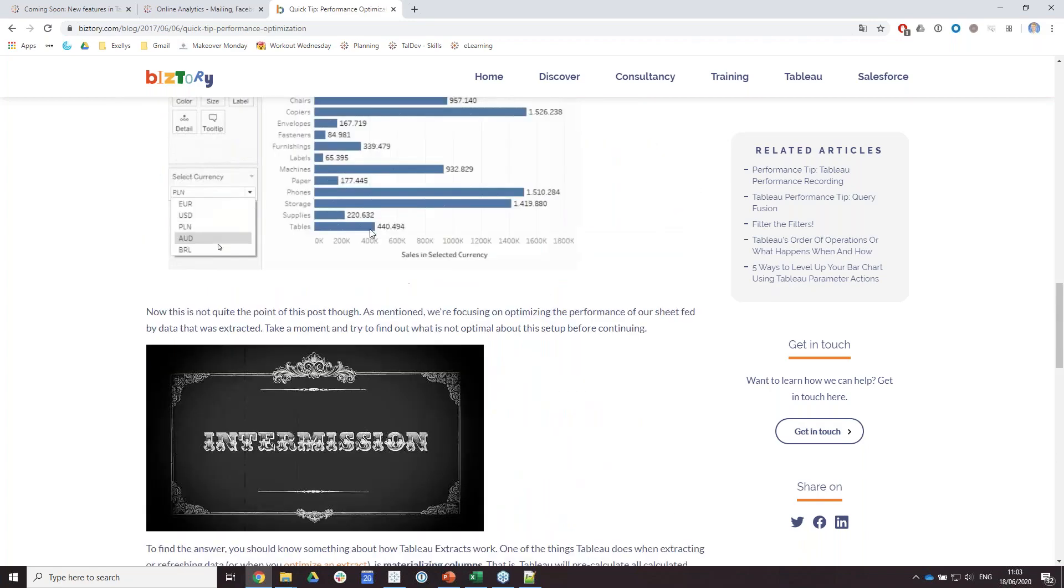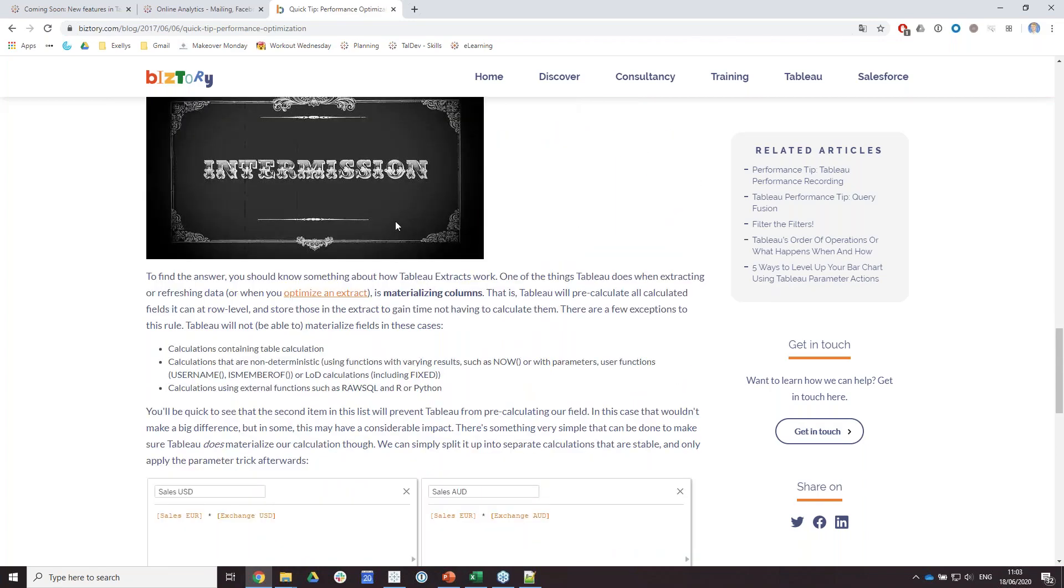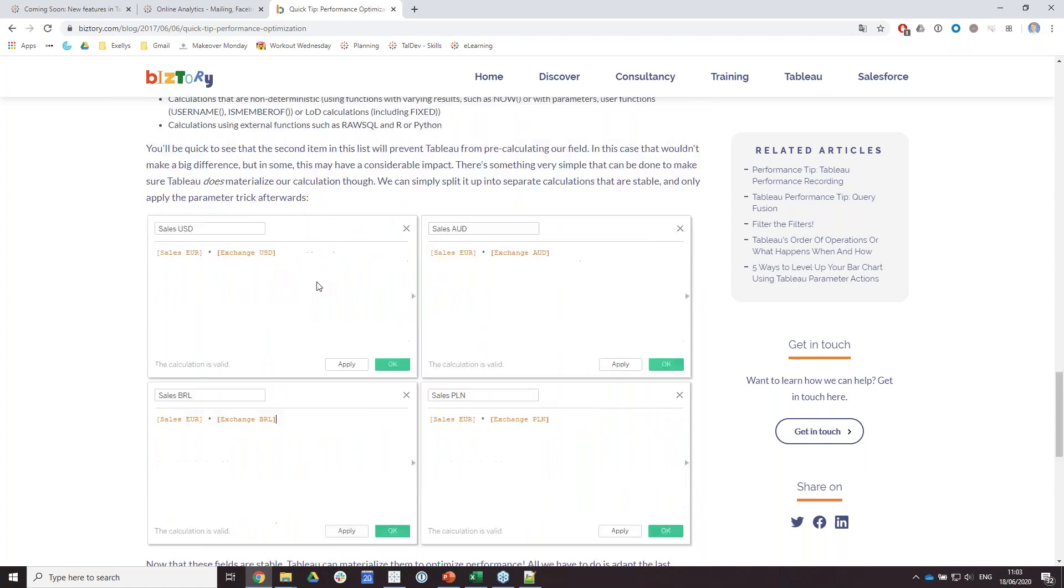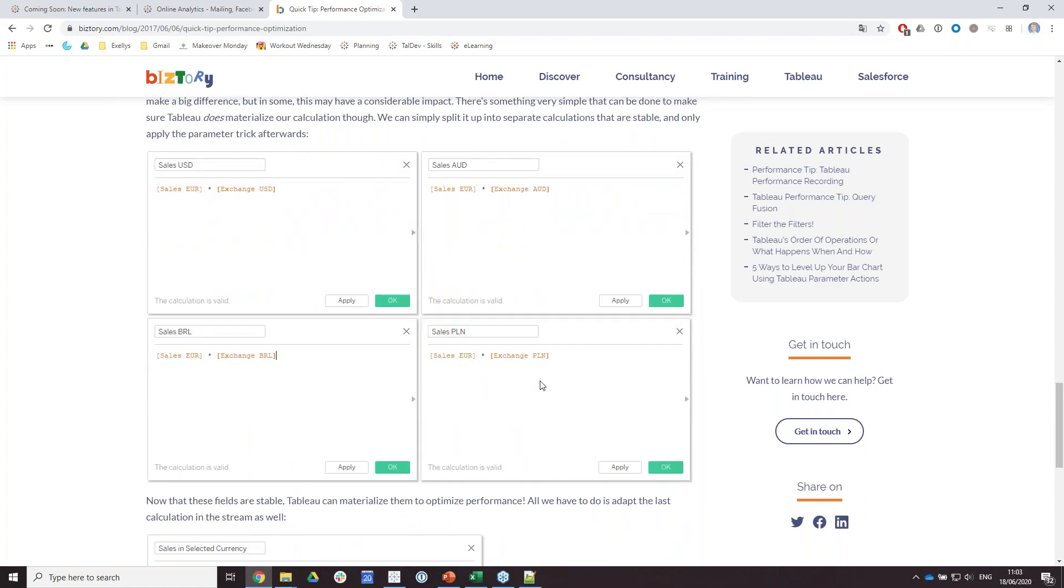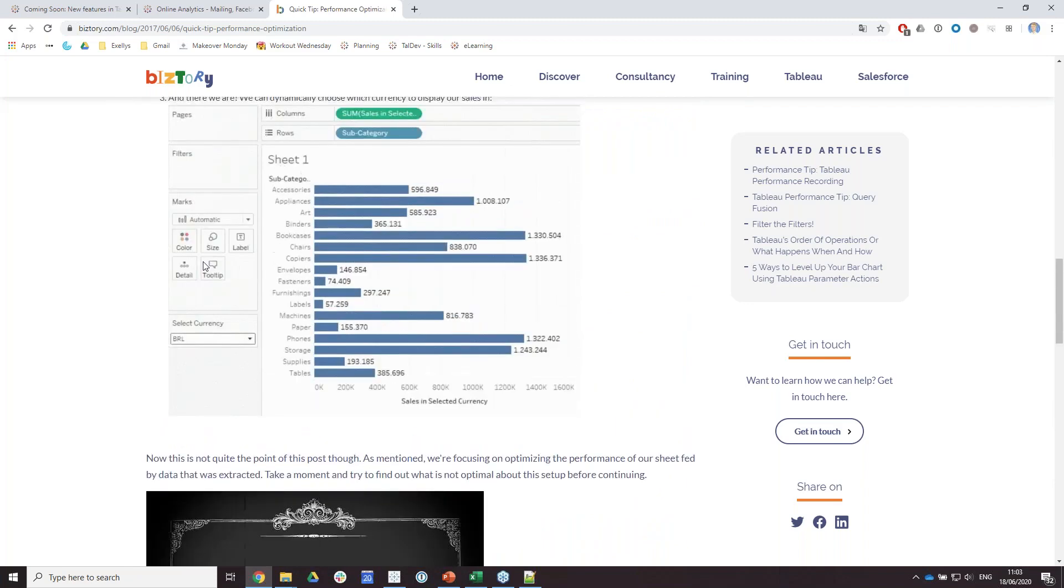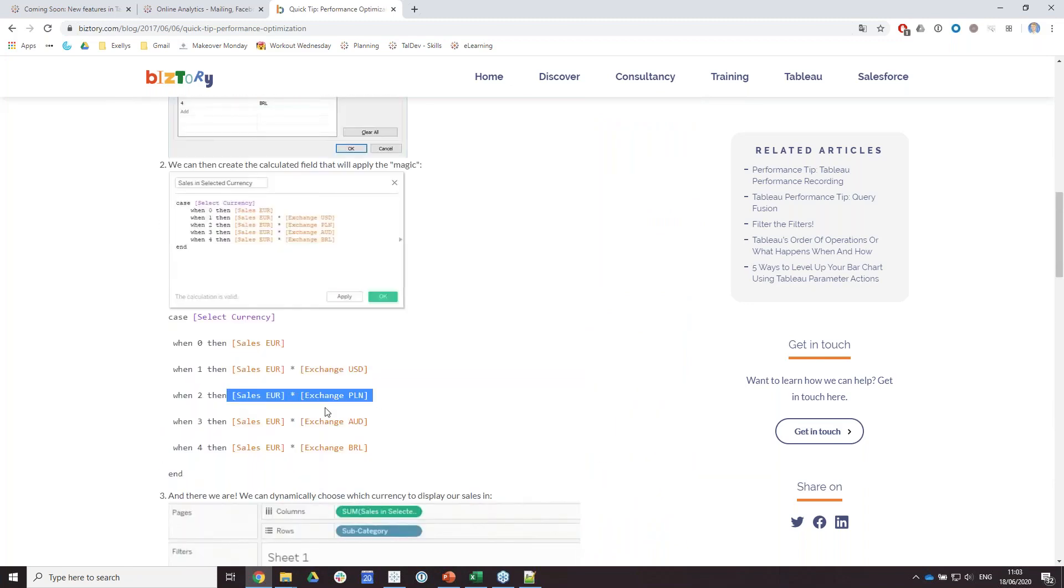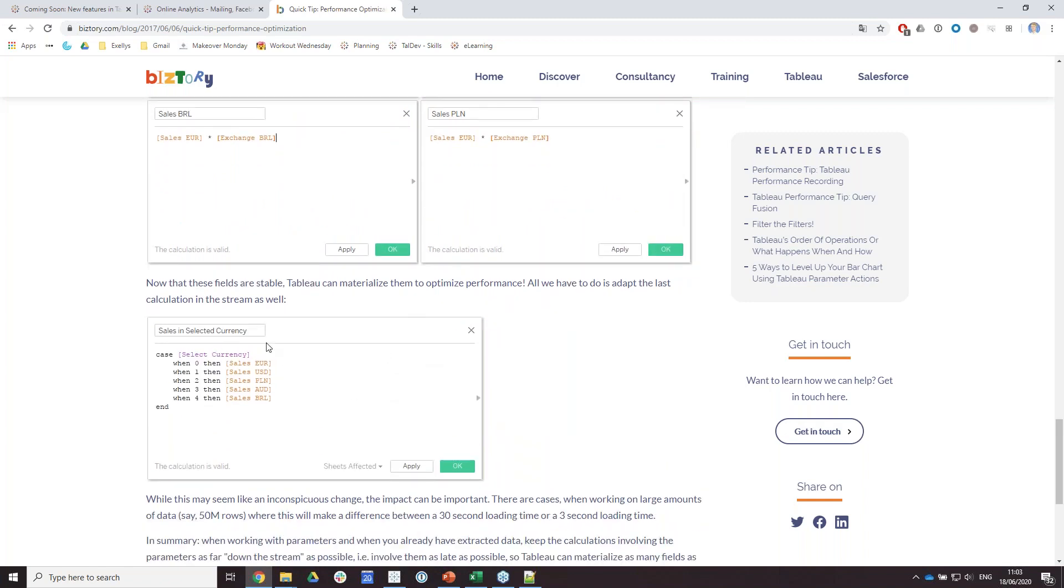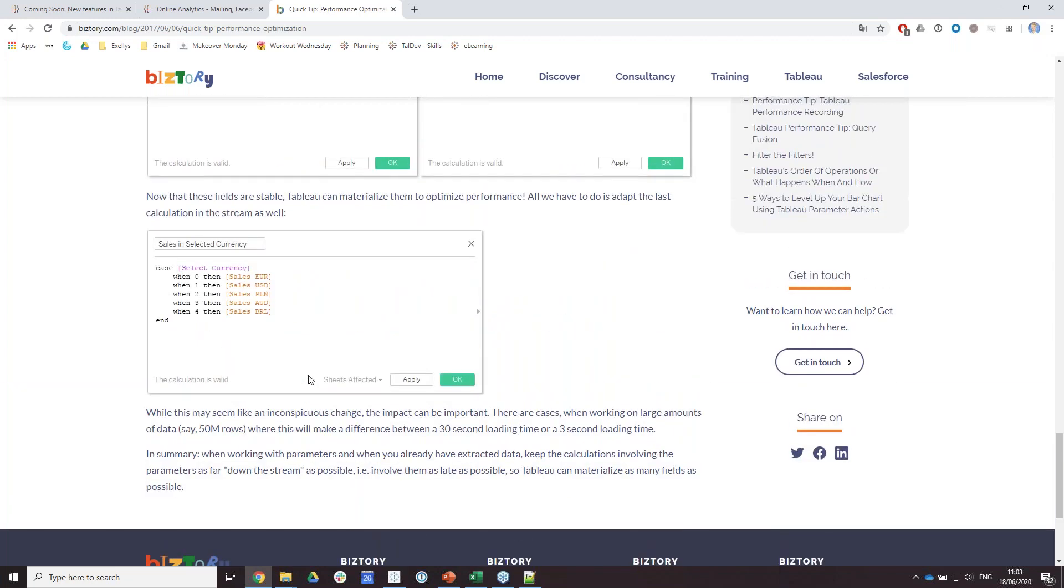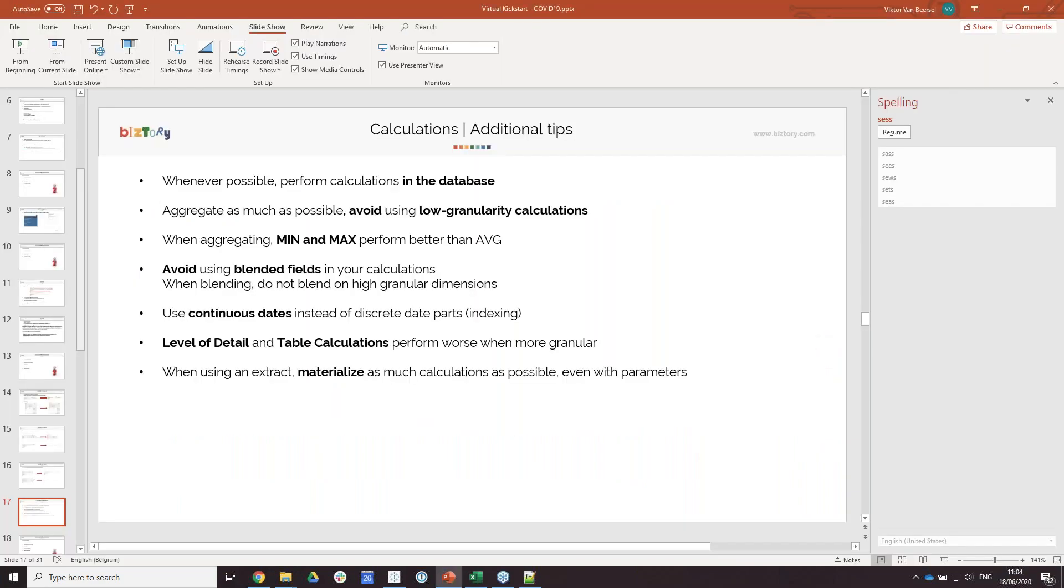Instead of doing that, you could create multiple calculations—in this case, four calculations—and materialize those four. Then after creating your extract and materializing those calculations, you could refer to those materialized calculations with the parameter. That is quite a cool trick. With large amounts, this will have significant impact as well.